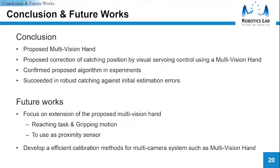Finally, conclusion. We proposed a multi-vision hand in which a number of small high-speed cameras are mounted on a robot hand. We also proposed the correction of the catching position by visual servoing control using a multi-vision hand. The experimental results succeeded in robot catching against initial estimation errors. The future works are focused on the extension of the proposed multi-vision hand such as reaching task and grasping motion and to use as proximity sensor. Also, we will develop efficient calibration methods for multi-camera systems such as multi-vision hand. That's all. Thank you for listening.